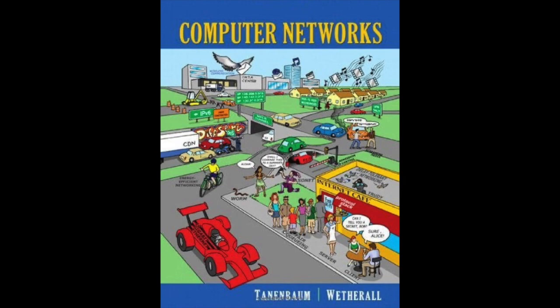If, in a connectionless network, packets are lost or mangled, the transport entity can detect the problem and compensate for it by using retransmissions. If, in a connection-oriented network, a transport entity is informed halfway through a long transmission that its network connection has been abruptly terminated, it can set up a new network connection to the remote transport entity, send a query asking which data arrived and which did not, and pick up from where it left off. In essence, the existence of the transport layer makes it possible for the transport service to be more reliable than the underlying network.